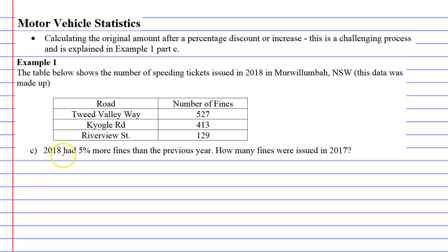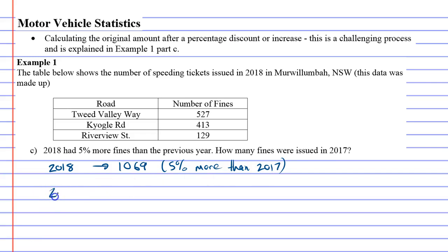Now, 2018 had 5% more fines than the previous year. So 2018, which we know to have 1,069 fines — worked out before by adding the three up — that is 5% more than the fines in 2017. In 2017, we don't know how many fines there were, but we do know it's less than 1,069.